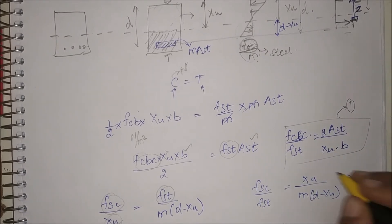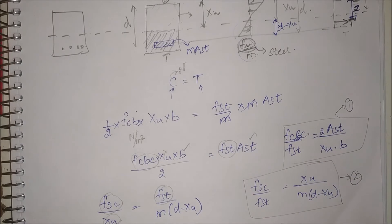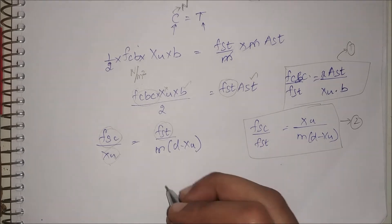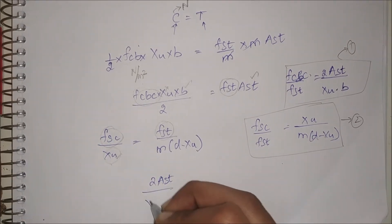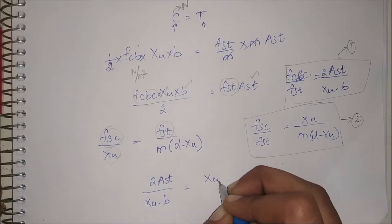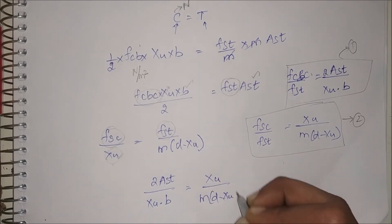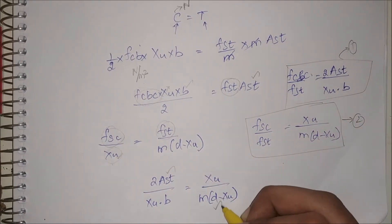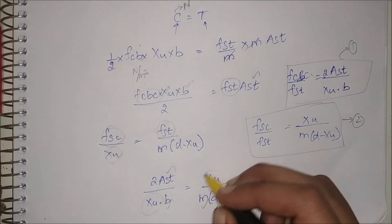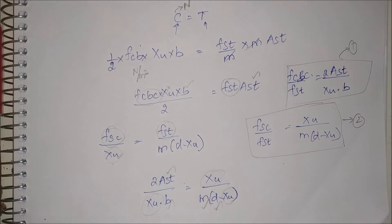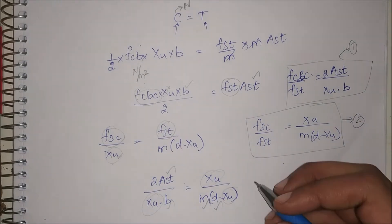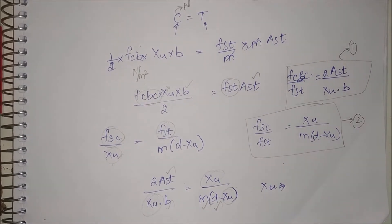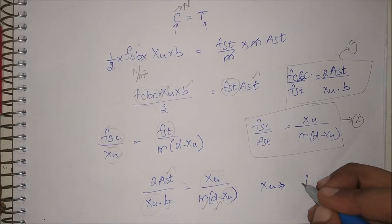Equation 1 and Equation 2 have the same left-hand side, so we can equate the right-hand sides. This gives: 2 times AST divided by (XU times B) equals XU divided by M times (D minus XU). Here I know AST, D, M, and B — the only unknown is XU. With one equation and one unknown, I can solve for XU.